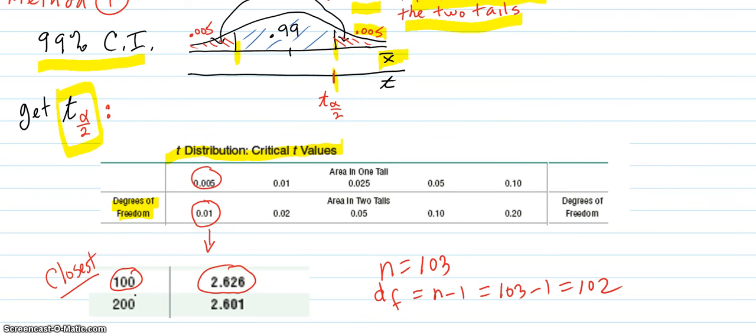Area in one tail is 0.005. That's this. So that's the column we're in. Also, area in two tails is 0.01. So either way, this is the correct column to be in.